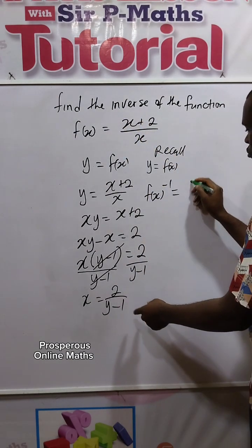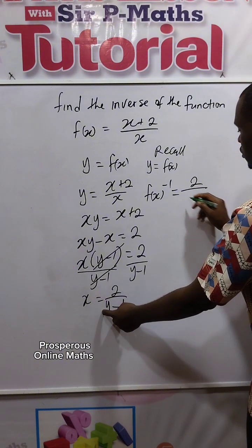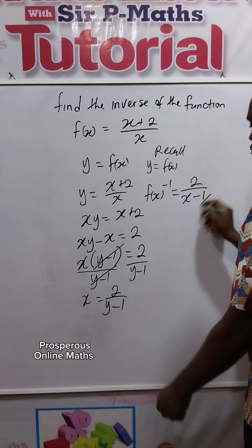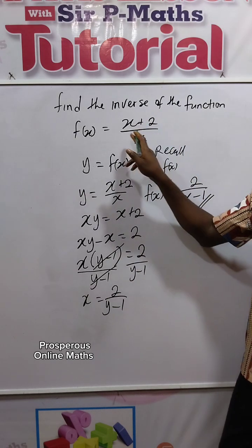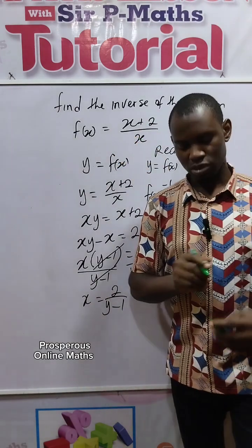To be equal to 2 over x minus 1. So we have simply found the inverse of the given function. Thanks so much for watching.